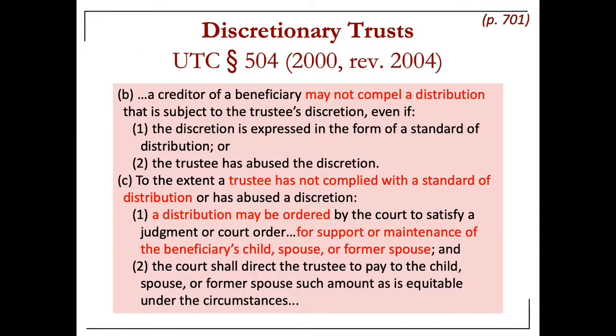A little bit about what the modern trend is as far as discretionary trusts are concerned. The modern trend — in both the third Restatement and the UTC — is to abolish the differences between the discretionary and the support trust.